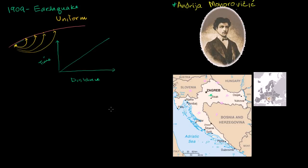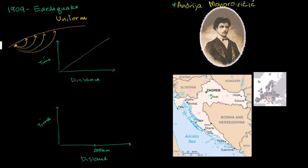But he noticed something interesting. When he actually measured when the waves from that earthquake reached different seismographic stations, he saw something unexpected. Up to 200 kilometers away, he saw exactly what you would expect from a uniform Earth — time proportional to distance. But at 200 kilometers, all of a sudden the waves were reaching farther stations faster. The slope of the line changed — it took less time for each incremental distance. Somehow the waves reaching stations more than 200 kilometers away were accelerated.